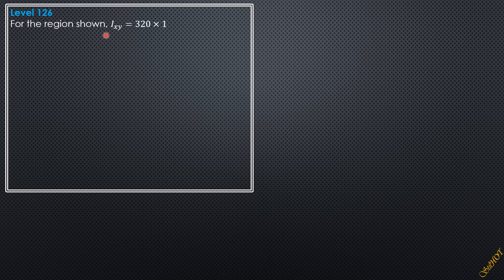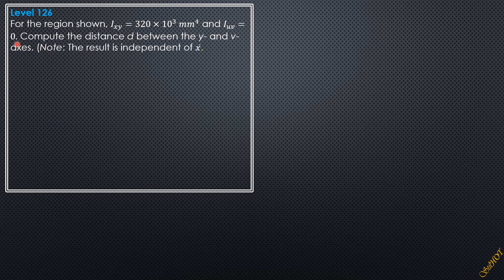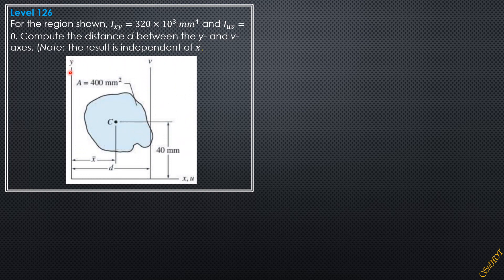Level 126: For the region shown, Ixy = 320 × 10³ mm⁴ and the product of inertia with respect to the u-v axis is zero. Compute the distance d between the y and v axes. Note that the result will be independent of x̄. The y axis and x axis are shown; the u axis is coincident with x, while the y and v axes are not coincident. With respect to the v axis, the product of inertia is zero as stated. The centroid is marked, and its distance from the y axis is x̄, while the distance between the y and v axes is d.